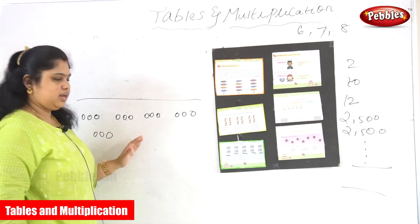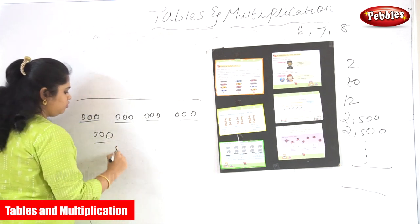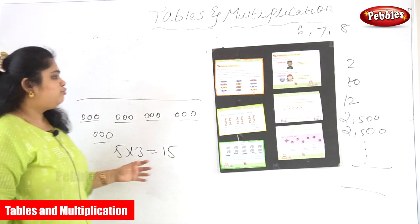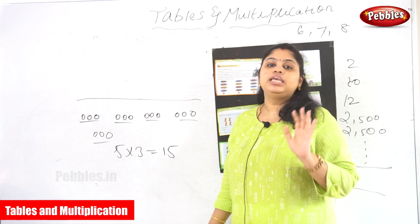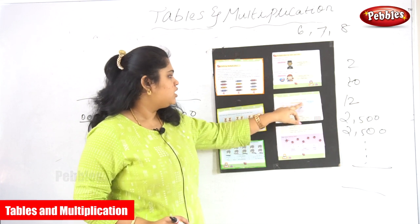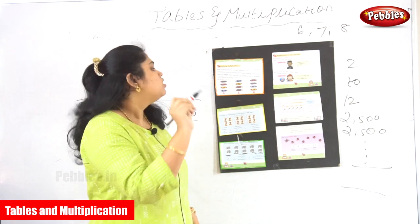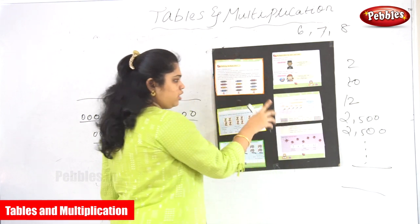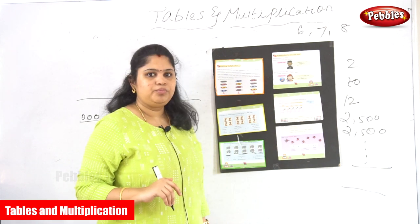See here — how many groups are there? 1 group, 2 groups, 3 groups, 4 groups, 5 groups — so 5 into 3 is 15. If you group the beads, you can make your calculations much easier. Instead of counting continuously one by one, I'm making groups. How many groups? 1, 2, 3, 4, 5 — five groups. In each group how many beads? 3 beads. So 5 into 3 is 15.